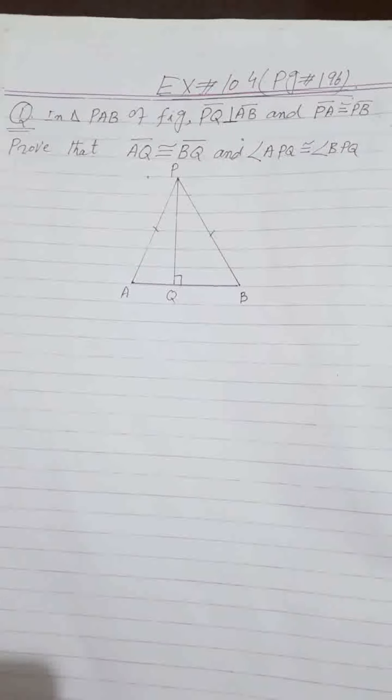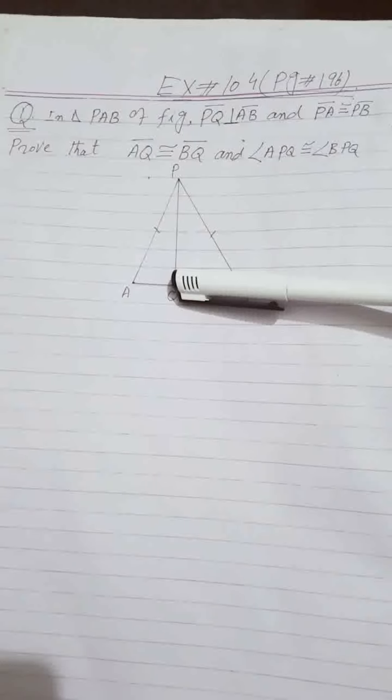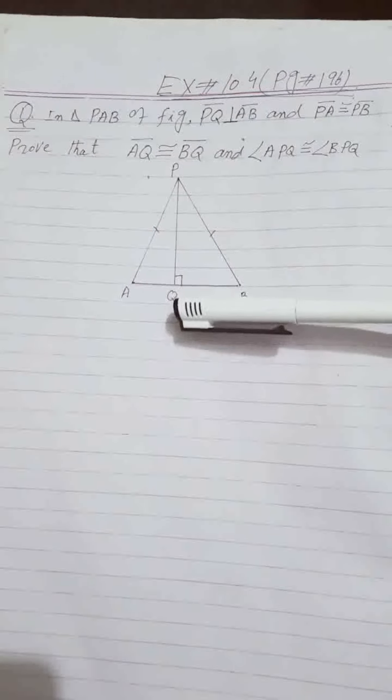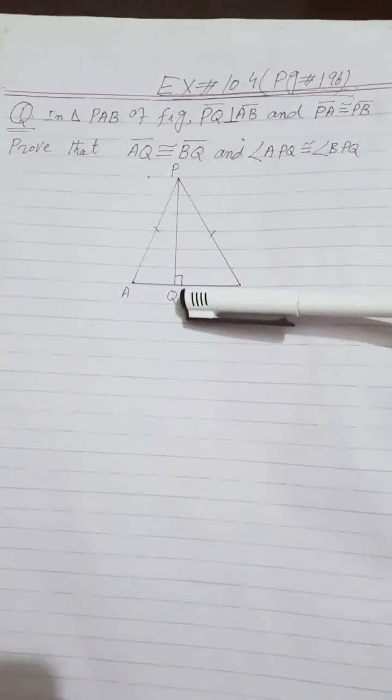I will give you a triangle PAB — vertices P, A, and B. In this triangle, PQ is perpendicular to AB, so Q is a point where PQ touches AB at a 90-degree angle. PA and PB are the sides of the triangle and they are congruent to each other.